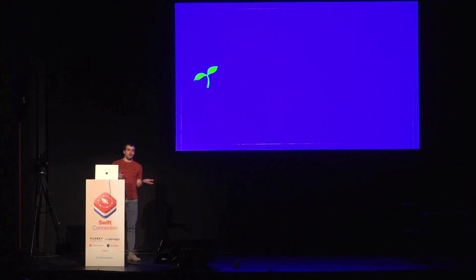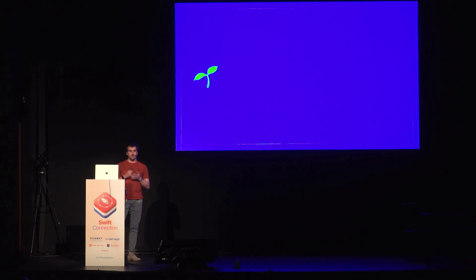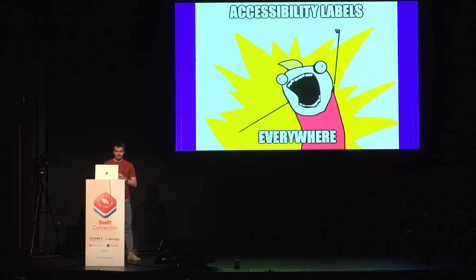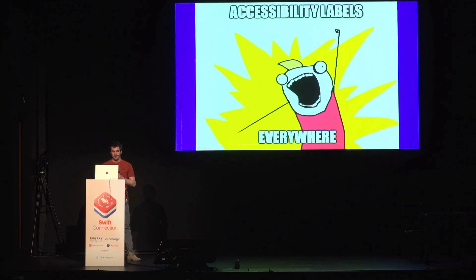Many of you might know a screen reader — VoiceOver on iOS devices — that can read out the elements on your screen. It's mostly used by people that have sight difficulties or are blind. So we can start by adding accessibility labels everywhere. Great idea, right? Well, it's a valiant effort. Labels aren't necessarily a silver bullet and do not encompass all of accessibility. And some things should not be labeled, as we will see later in this presentation.